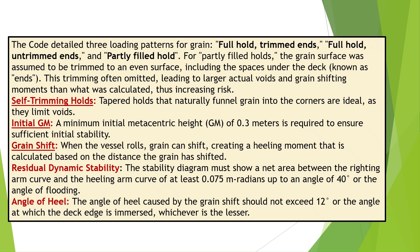The code details three loading patterns for grain: full hold trimmed ends, full hold untrimmed ends, and partly filled hold. For partly filled holds, the grain surface was assumed to be trimmed to an even surface, including the spaces under the deck known as ends. This trimming was often omitted, leading to larger actual voids and grain-shifting moments than what was calculated, thus increasing risk.